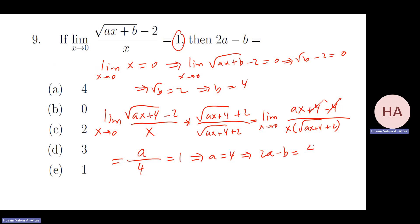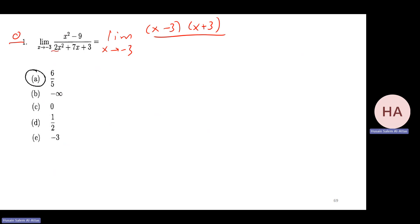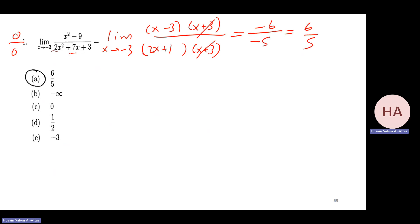So two a minus b equals eight minus four, which is four. This is simple factoring. For the next problem, checking by substitution gives zero over zero, so x plus three must be a factor. We have two x squared minus twenty-one x plus three; after cancellation and substitution of minus three, we get minus six over minus five, which is six over five.